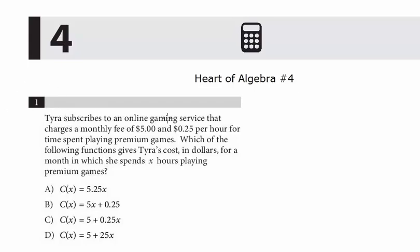Tyrus subscribes to an online gaming service that charges a monthly fee of $5 and $0.25 per hour for time spent playing premium games. Which of the following functions gives Tyrus's cost in dollars for a month in which he spends X hours playing premium games? We've seen this question before—linear equations. Let's think about them in slope-intercept form.